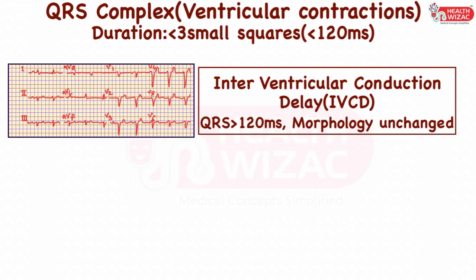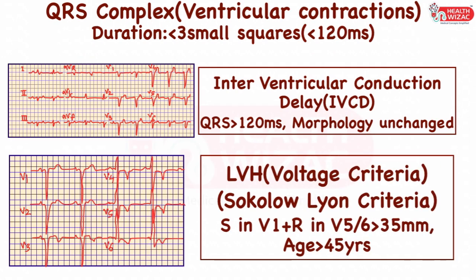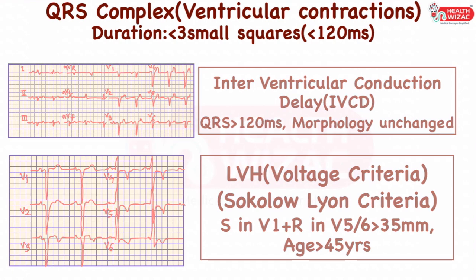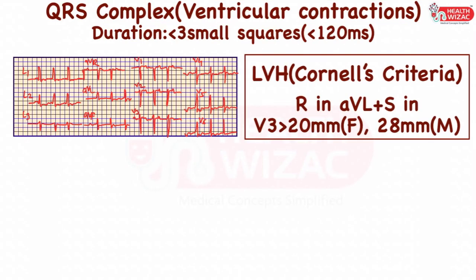LVH or left ventricular hypertrophy can be diagnosed by two criteria. By Sokolow-Lyon criteria: if the sum of S wave in V1 and R wave in V5 or V6 is more than 35 mm and the patient is older than 45 years. By Cornell criteria: if the sum of R wave in AVL and S wave in V3 is more than 20 mm in females or more than 28 mm in males.